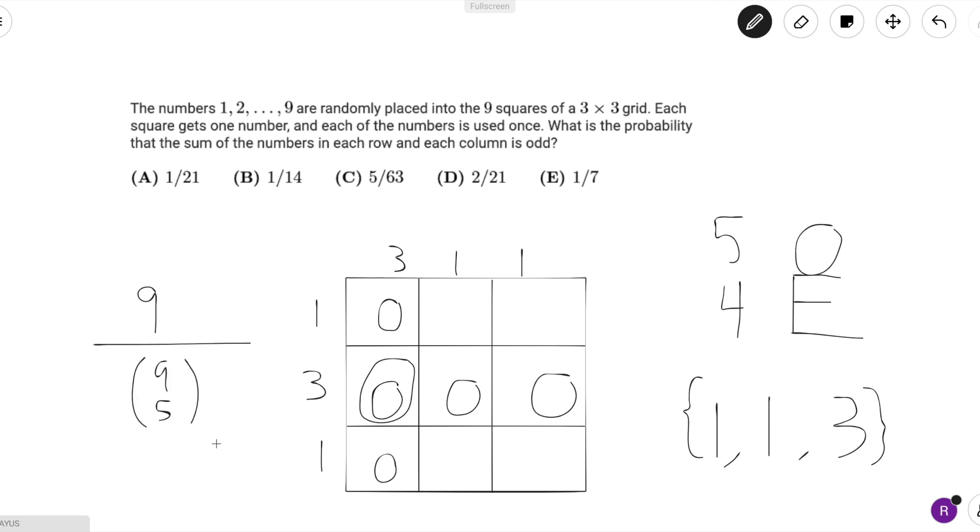But wait, we're not done yet. Because when we found nine and nine choose five, we assumed that each of the odds and each of the evens were indistinguishable, meaning that one was the same as three, three is the same as five, five is the same as seven, and so on.